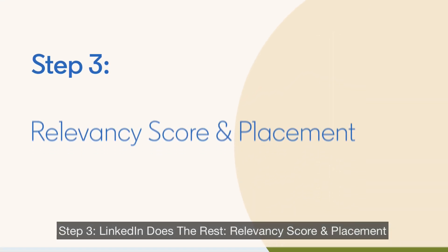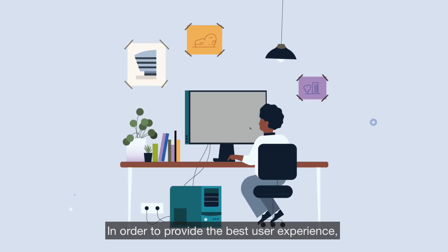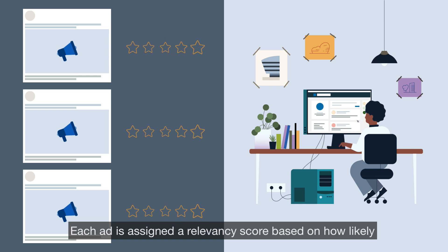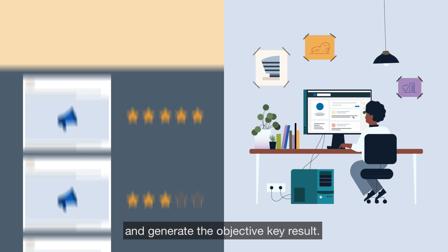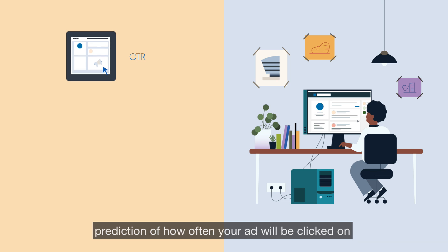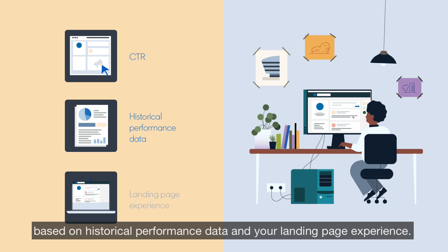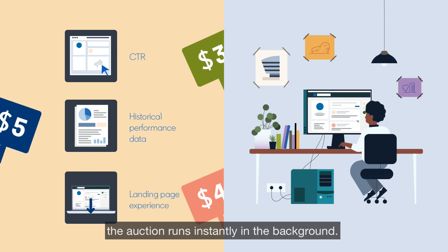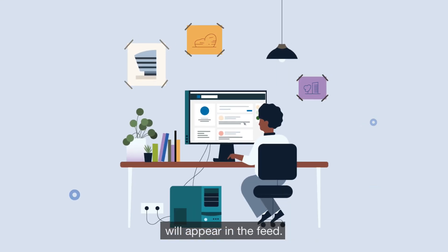Step 3: LinkedIn does the rest. Relevancy score and placement. In order to provide the best user experience, the ad auction also considers your relevancy score in addition to your bid. Each ad is assigned a relevancy score based on how likely the member is going to respond to the ad and generate the objective key result. This could include factors such as expected CTR, prediction of how often your ad will be clicked on based on historical performance data, and your landing page experience. Every time a member visits the LinkedIn feed, the auction runs instantly in the background. A campaign that has won the auction for a particular audience will appear in the feed.